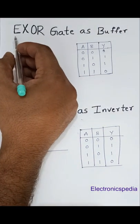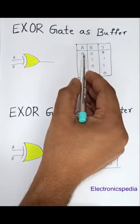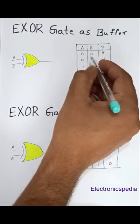Hey guys, I'm going to show how to make an XOR gate work as a buffer. This is the XOR gate truth table. What I'm going to do is connect the A input to zero.